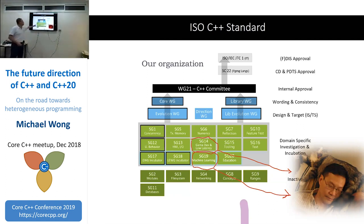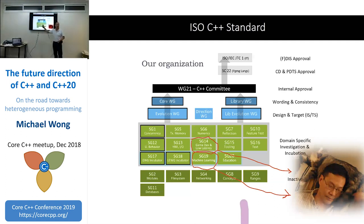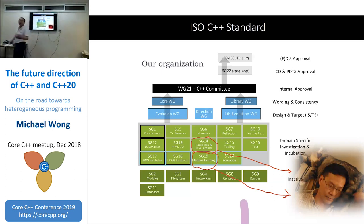You can join these groups. These incubators serve as early gatekeepers on papers, keeping them back if they're not good enough before they go to the main committee. SG14's full name is Low Latency, Games, Embedded, and Financial. I have over 700 people signed up in that Google group, and I separate it so each sub-domain has a special interest group chair, since I'm not an expert in all these domains.